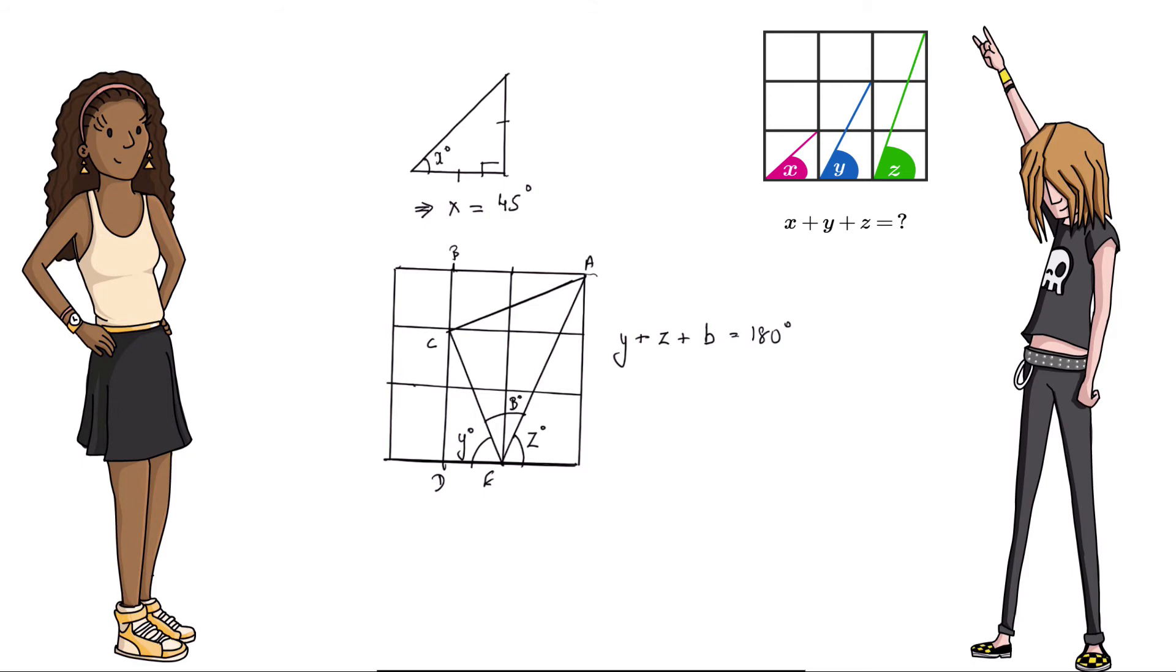Now these two triangles here are congruent. So if this angle is Y then this angle is also Y and thus this angle is 90 minus Y, which means that this angle here is 90 degrees.